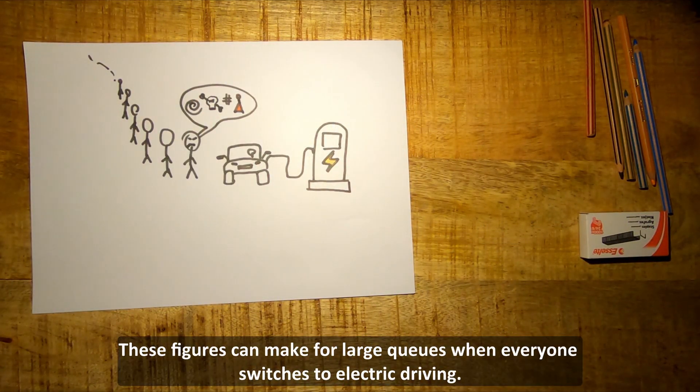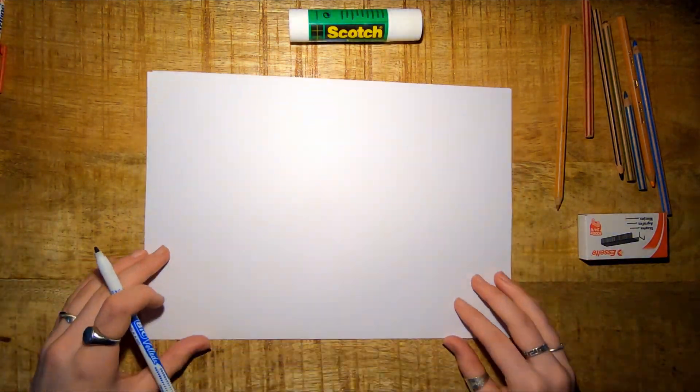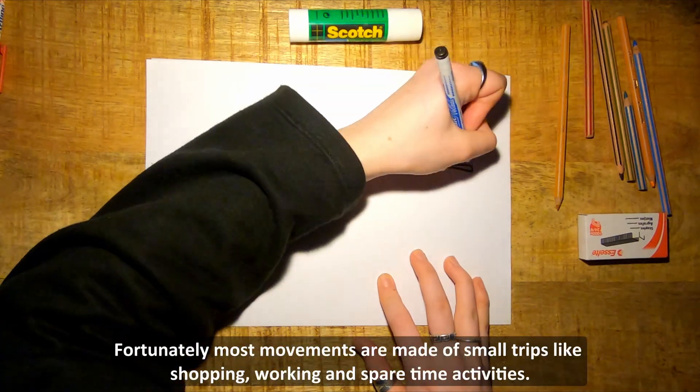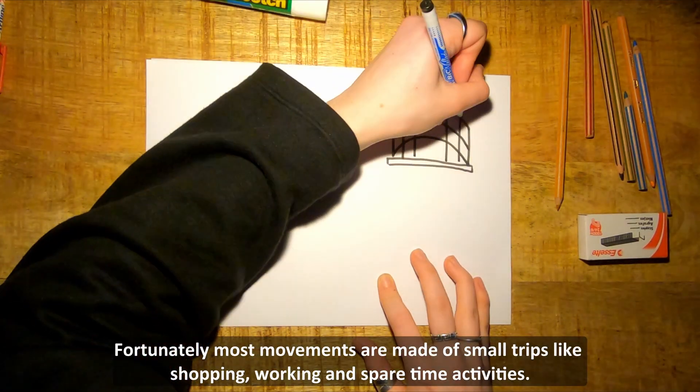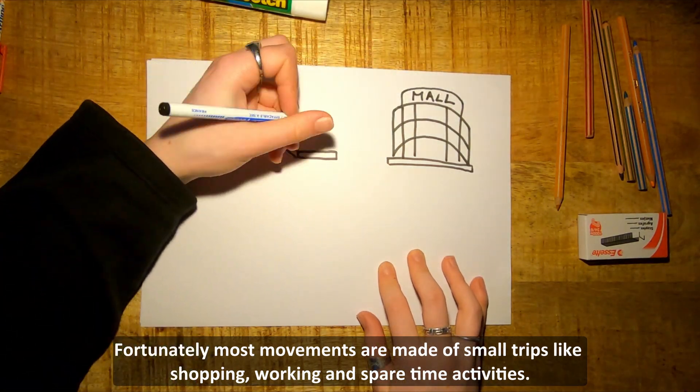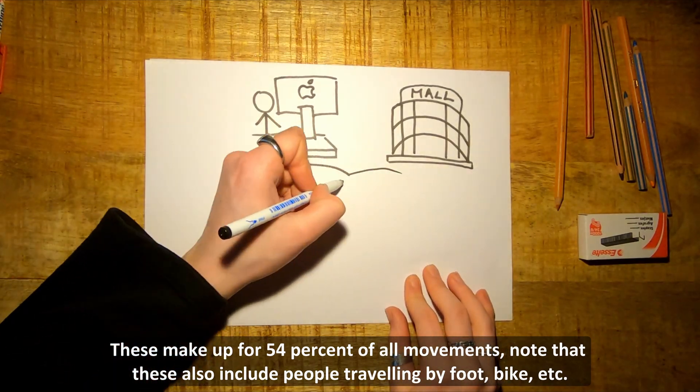These figures can make for large queues when everyone switches to electric driving. Fortunately, most movements are made of small trips like shopping, working and spare time activities. These make up for 54% of all movements.